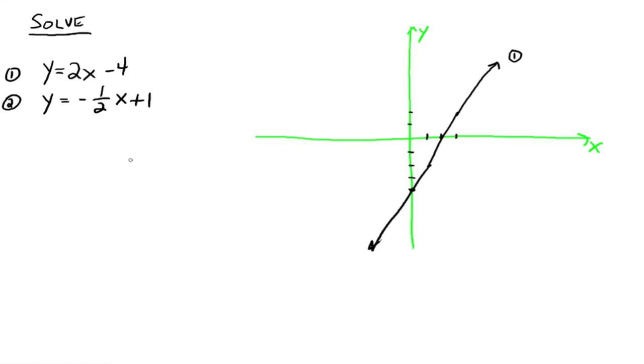And then 2 is also already in slope-intercept form. So, we could say, alright, the y-intercept is 1. So, there's 1. And then the slope's negative 1 half. So, we go down 1 and over 2. And we connect the dots. That's number 2. And they intersect at that point right there, which is 2, 0. So the solution to this system is 2, 0. That's the one point that both these lines have in common. Let's do one more.